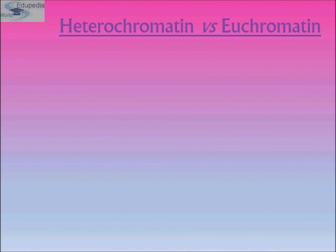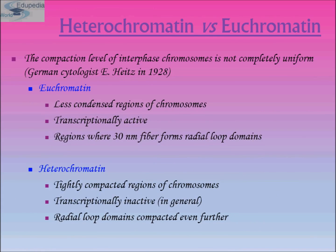Traditionally, interphase chromatin is classified as either euchromatin or heterochromatin depending on its level of compaction. Euchromatin has a less compact structure and is often described as an 11 nanometer fiber that has the appearance of beads on a string, where the beads represent nucleosomes and the string represents DNA. In contrast, heterochromatin is more compact and is often reported as being composed of a nucleosome array condensed into a 30 nanometer fiber.